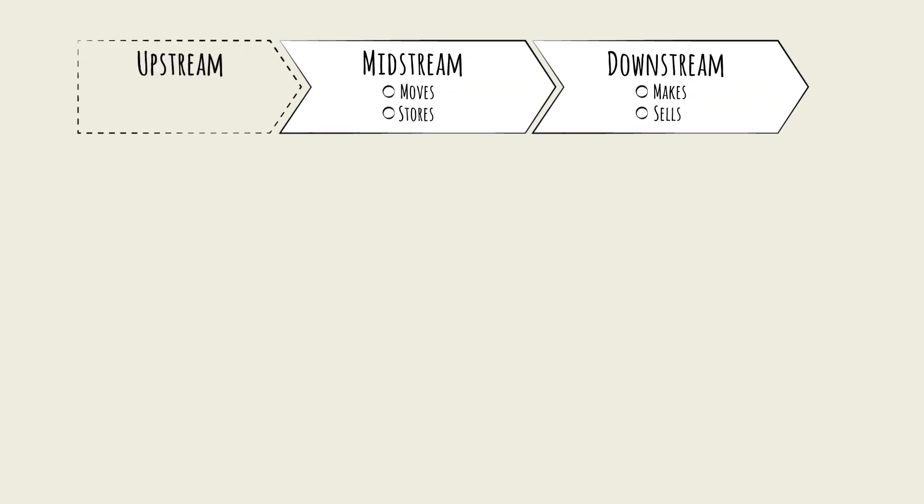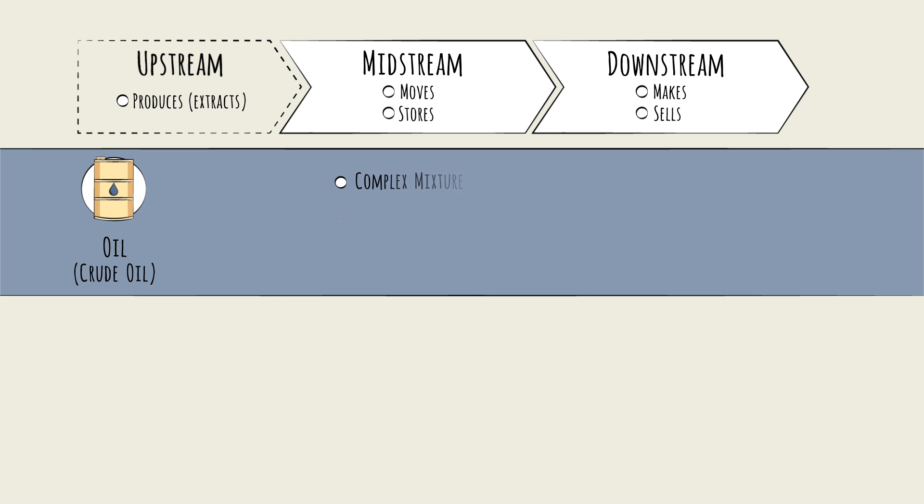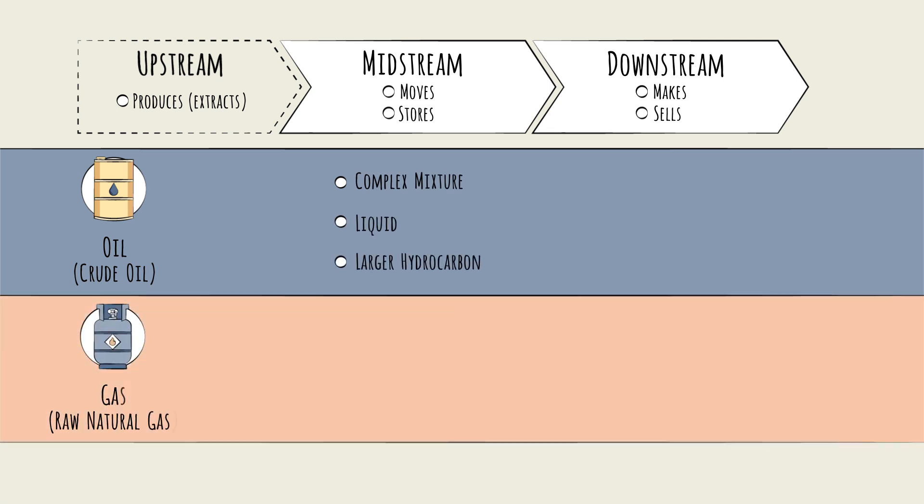Upstream, the piece of the puzzle we're not focused on in this primer, produces—aka extracts from the ground—two distinct types of raw hydrocarbon mixtures: crude oil, a complex liquid mixture of larger hydrocarbon molecules, and raw natural gas, a simpler gaseous mixture of smaller hydrocarbon molecules.